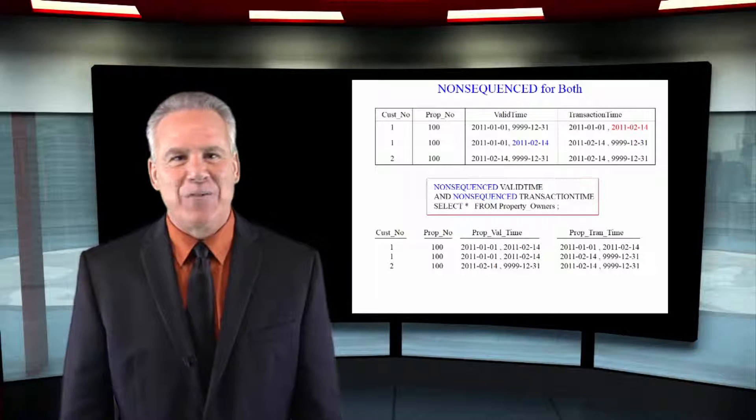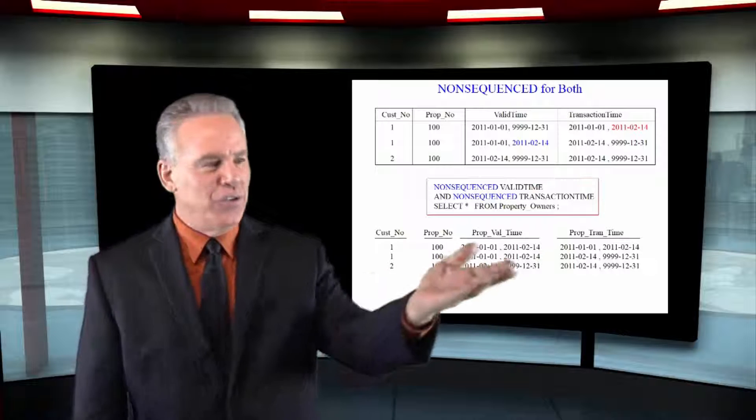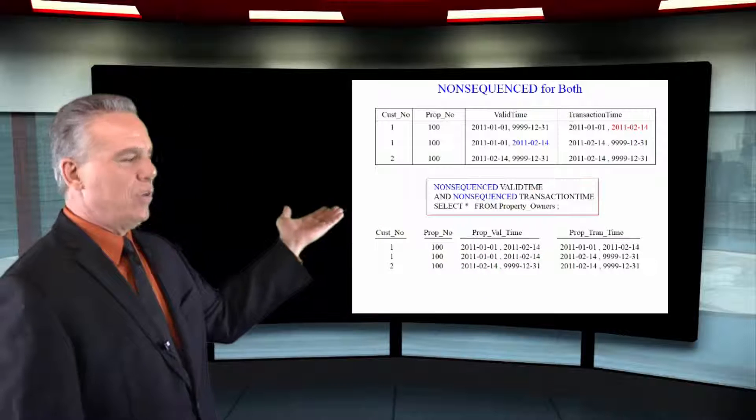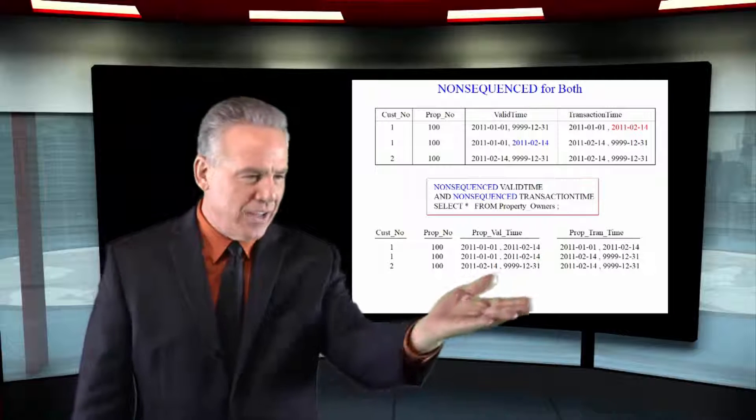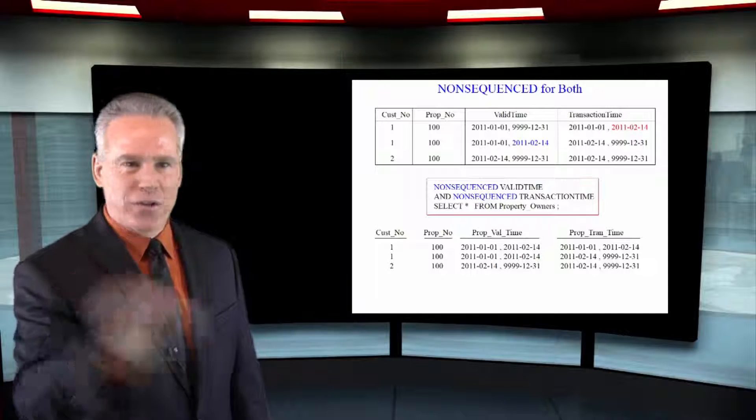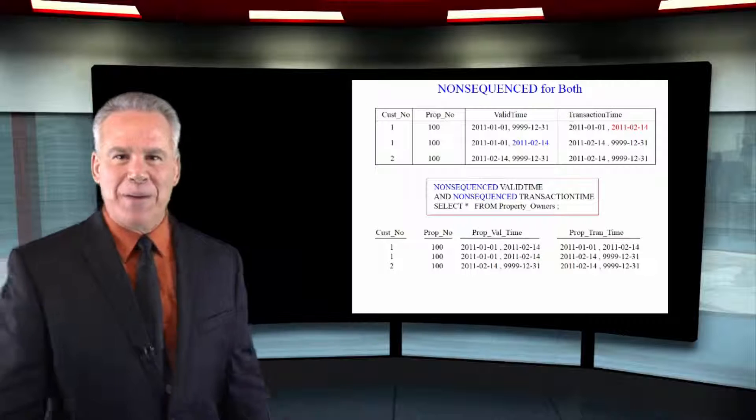If I want to see every row in that table, I can use this SQL. Non-sequenced valid time and non-sequenced transaction time. Select everything from property owners. All the rows are coming back.